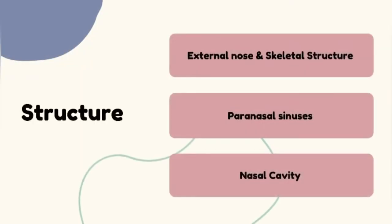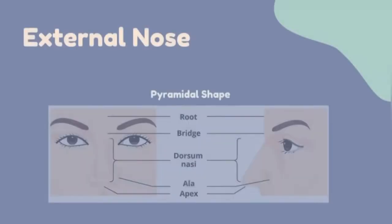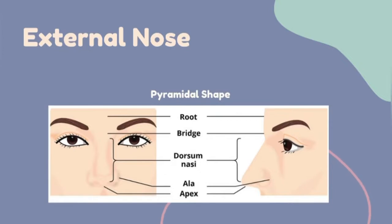Thank you, Grace. Moving on, we will be talking about the structure of the nose, covering the external nose and skeletal structure, paranasal sinuses, and the nasal cavity. Starting with the external nose, we can see that it is pyramidal in shape. There is the root located superiorly and apex located inferiorly. Between the root and the apex are the bridge and dorsum nasi. The ala nasi are the wings of the nostrils, which laterally bound the two nostrils, also called nares.